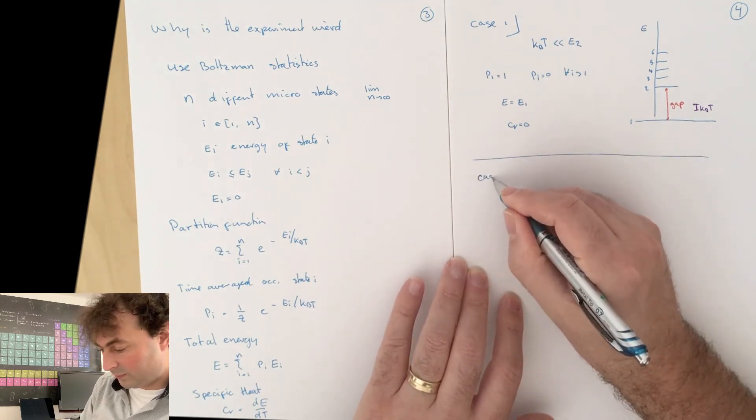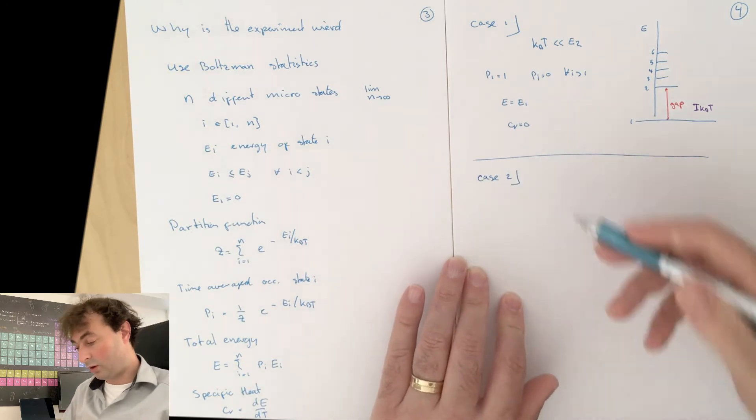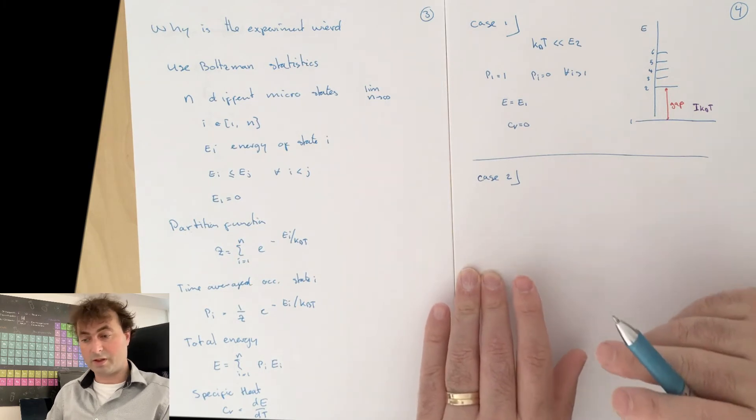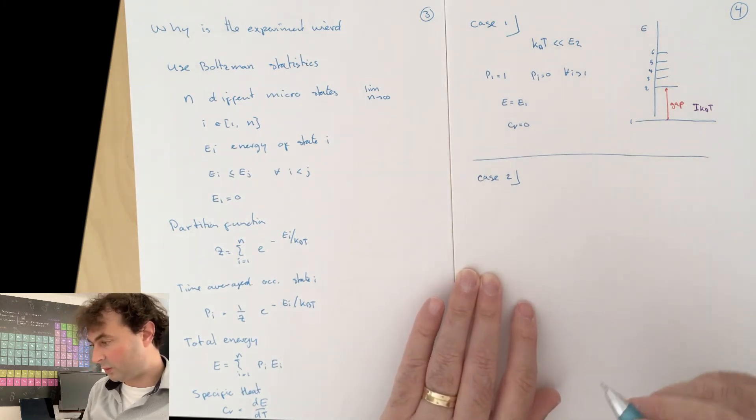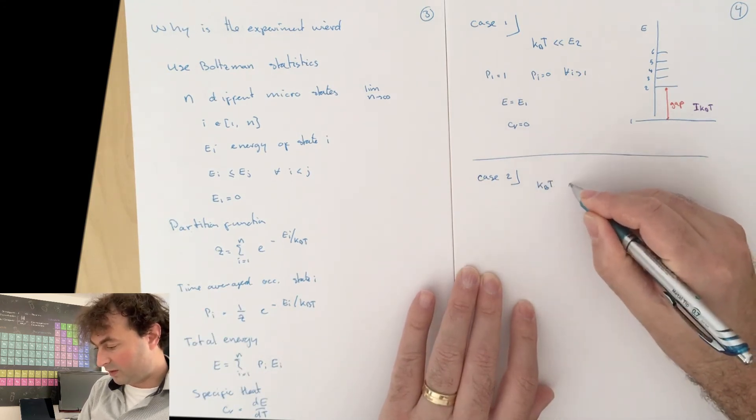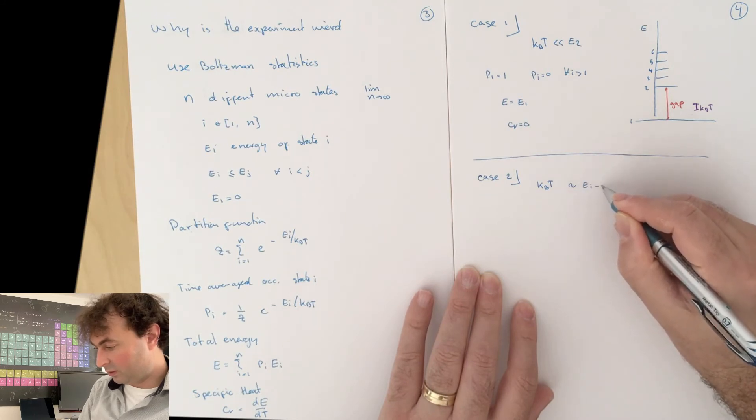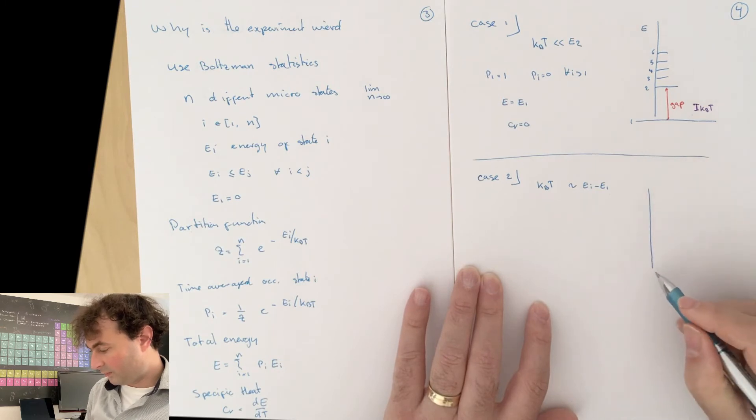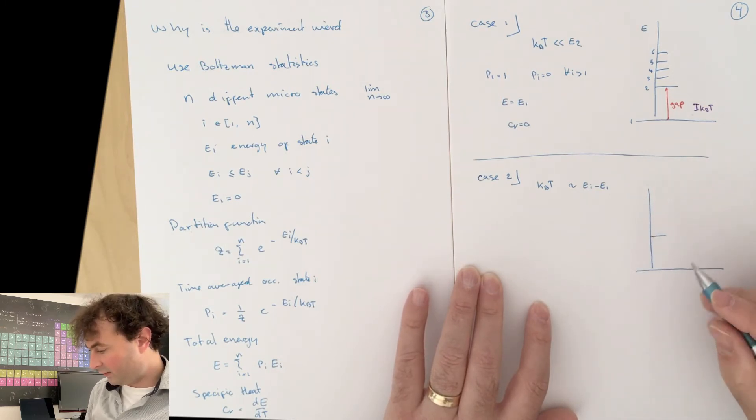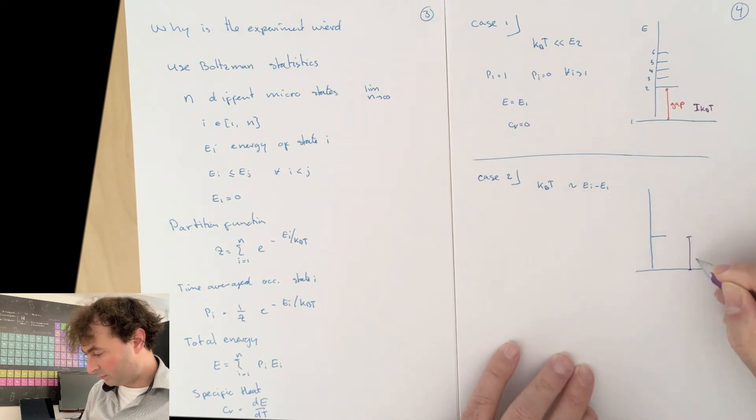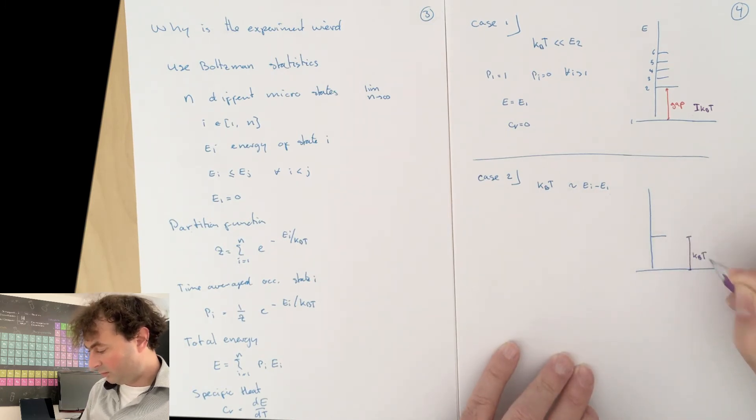Now let's have a look at the second case. There is no problem with a zero-specific heat. The statement is, it's weird for a metal. Let's have a look at case 2. k Boltzmann T is going to be roughly equal to EI minus E1. So I have an excited state. I'm not sure if there is a gap. I haven't said anything about that. But I'm going to put in a temperature which is roughly equal.